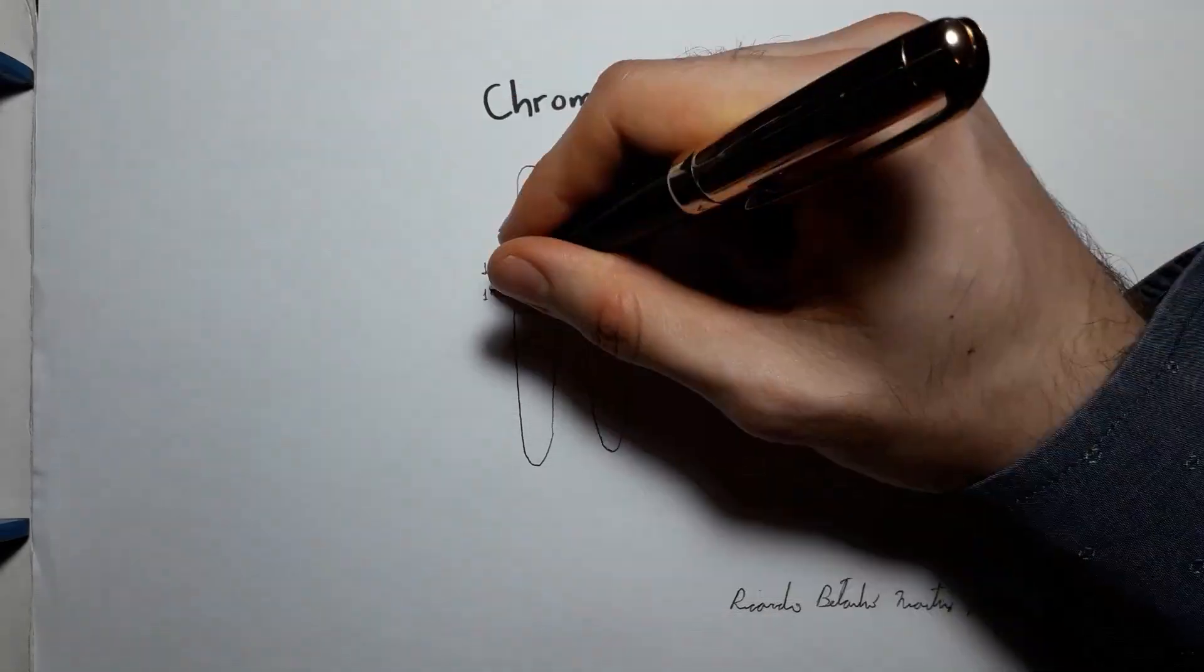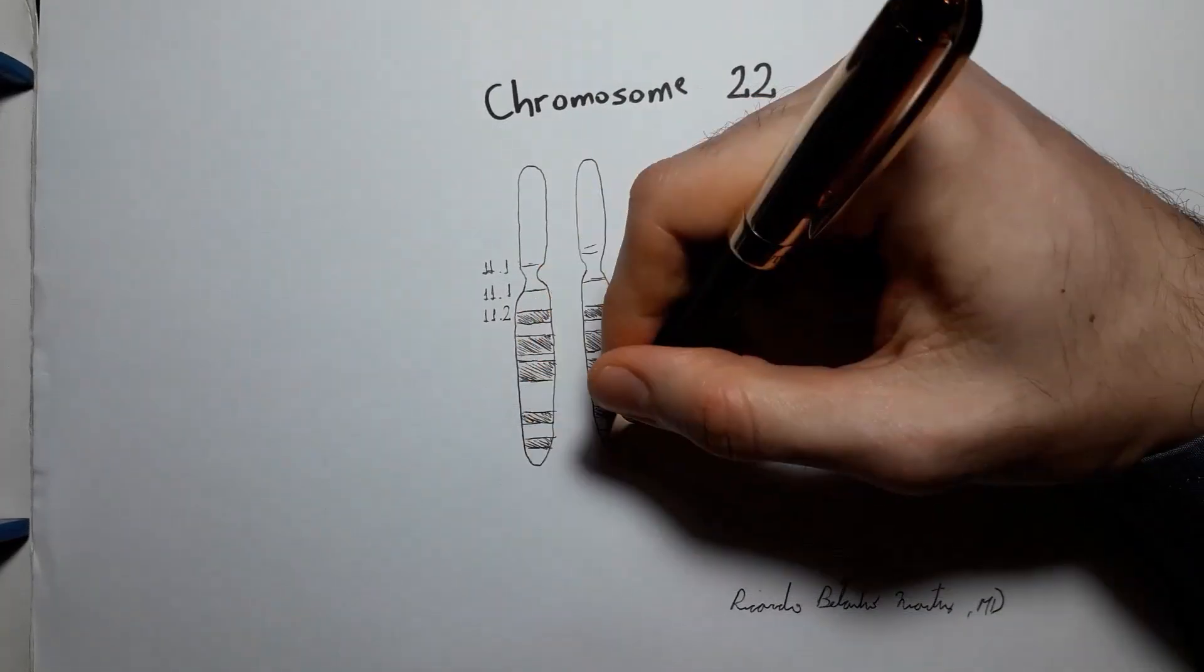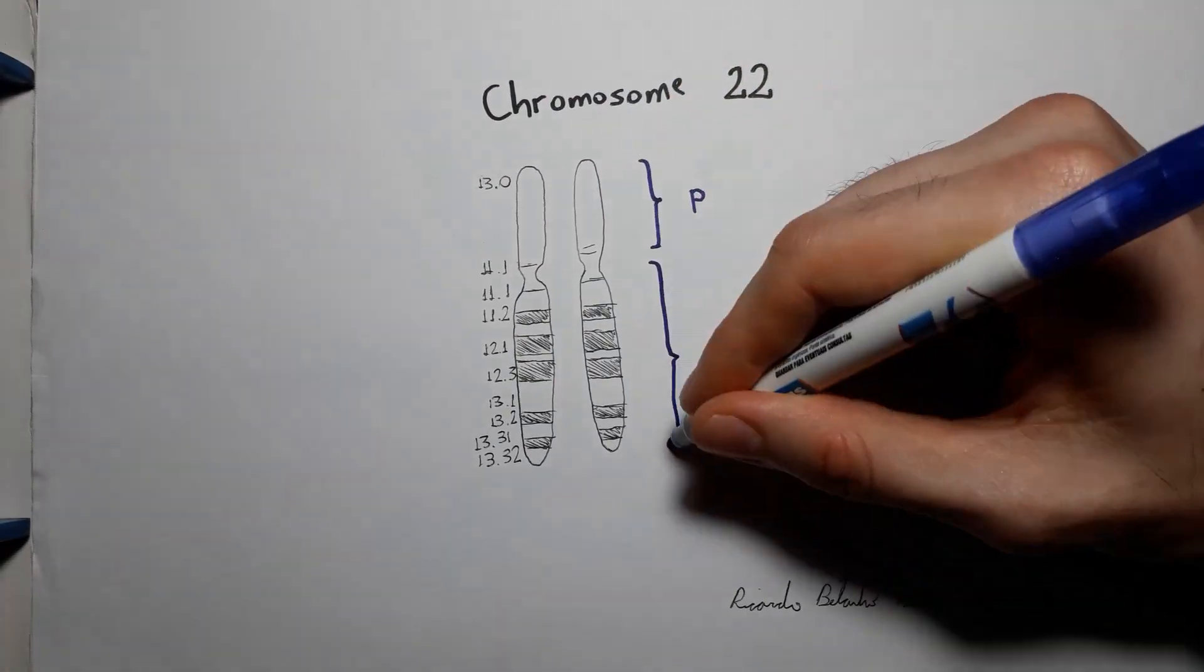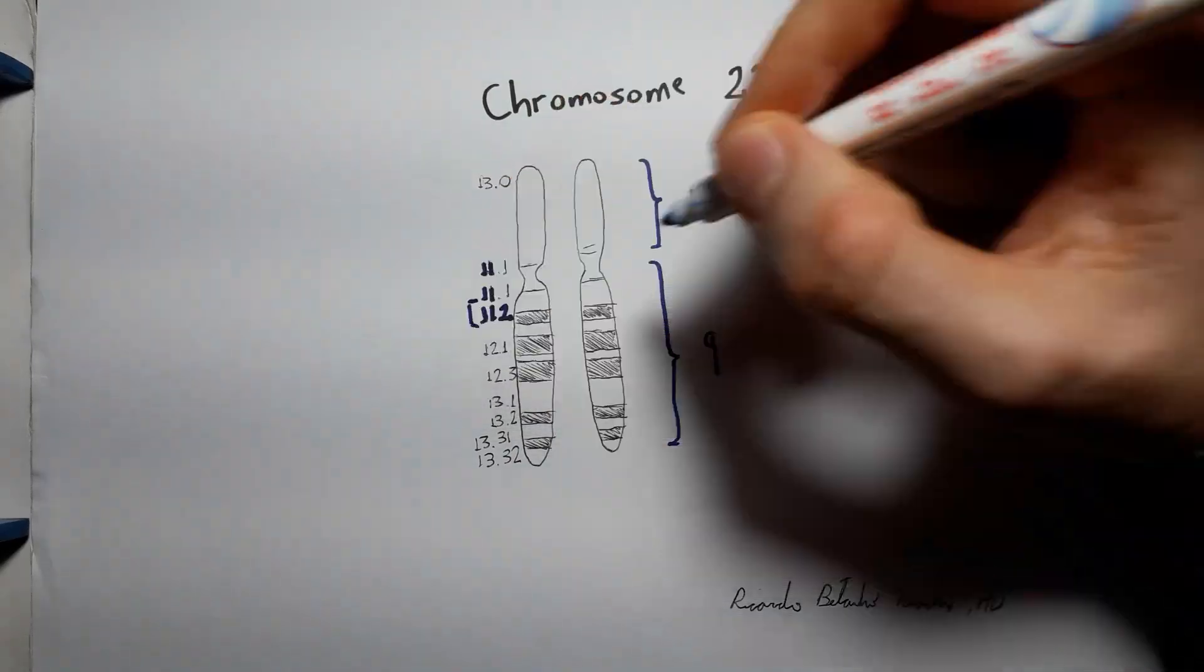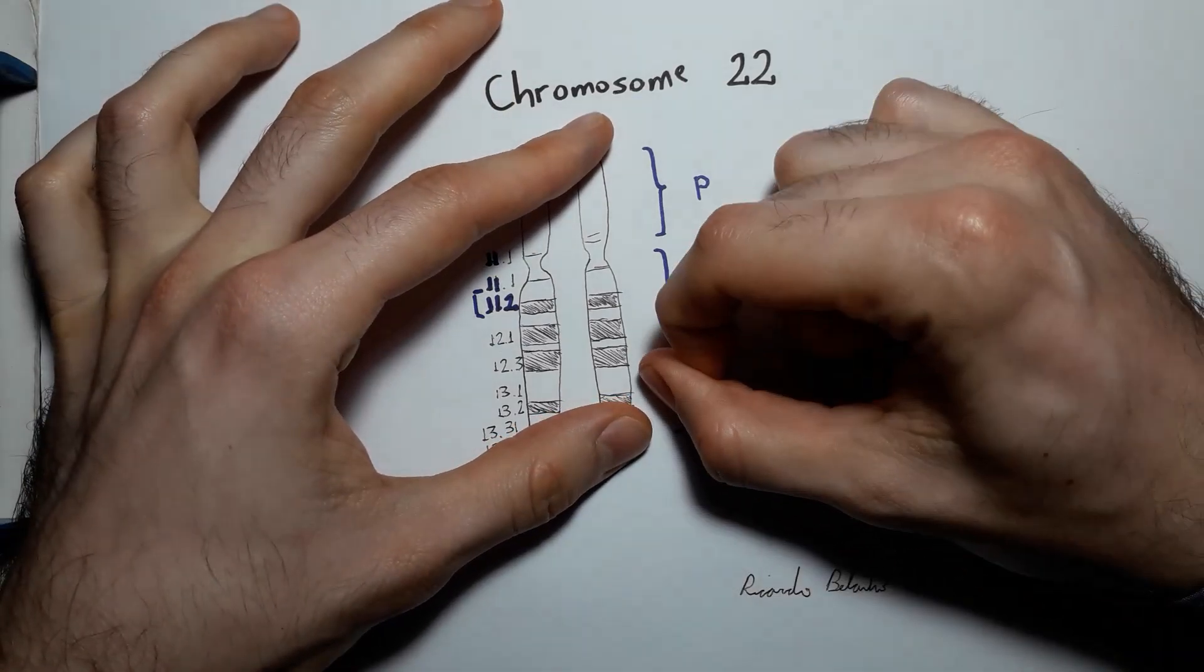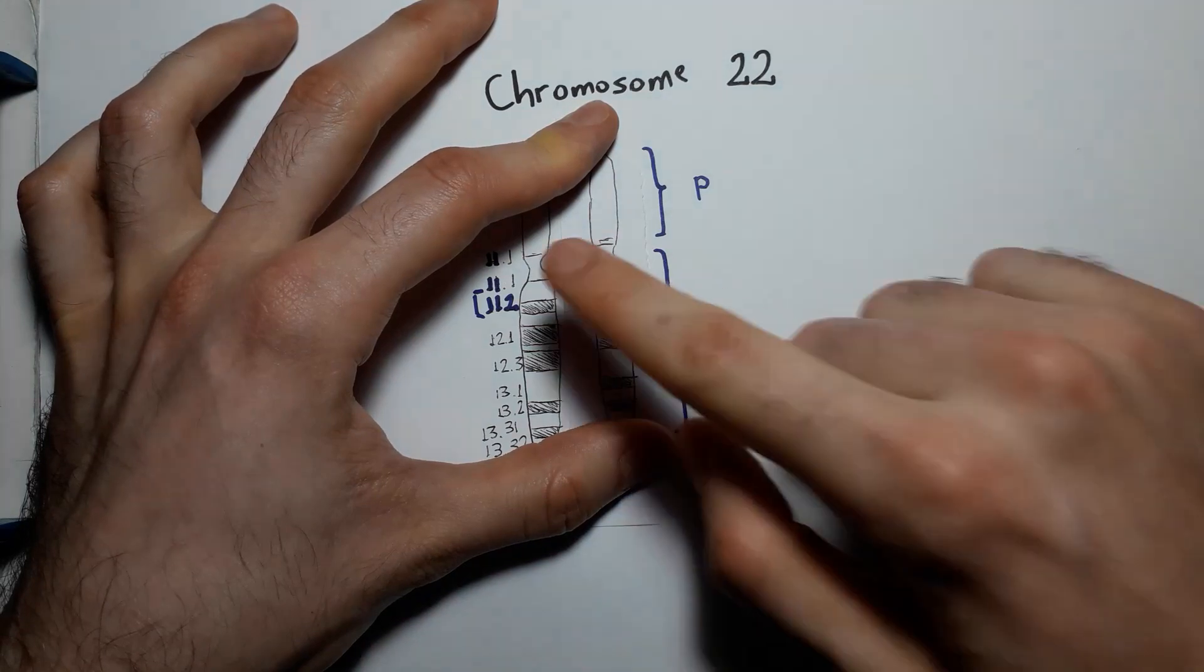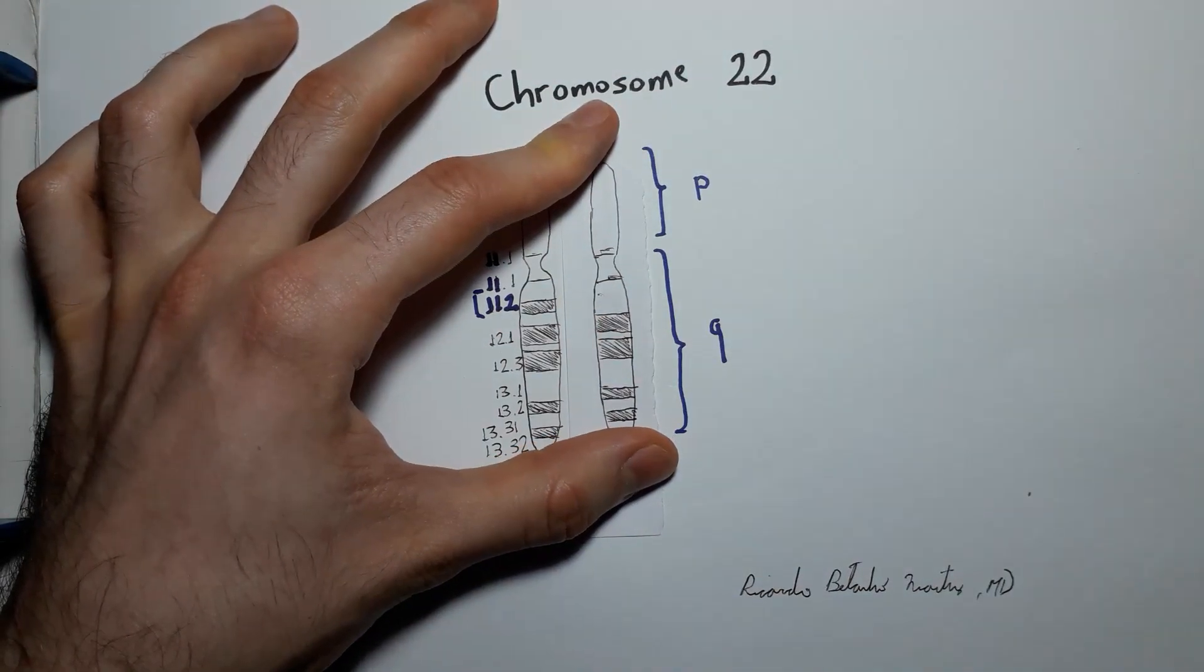This just means that on chromosome 22, on its long arm—when we talk about chromosomal arms, P stands for petit, short in French, and Q is just the next letter after P and stands for the long arm of the chromosome—11 means region 1, band 1, and 2 means subband 2. So when you lose this specific part of chromosome 22, you can develop any of these four diseases.